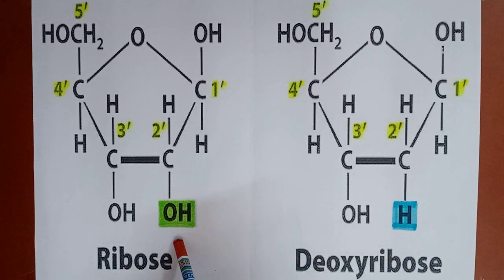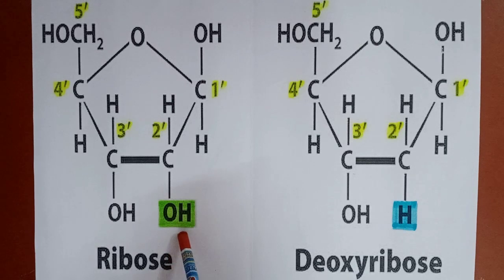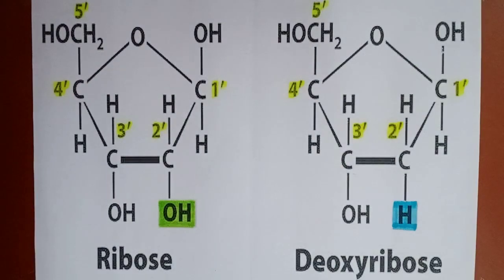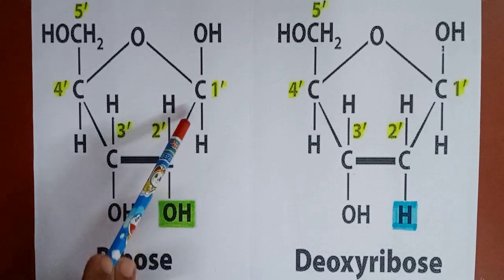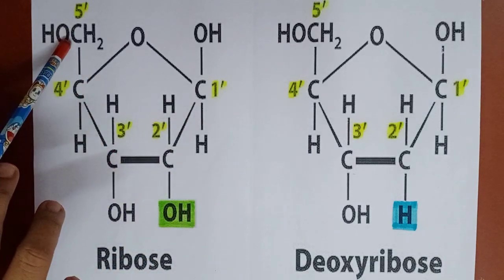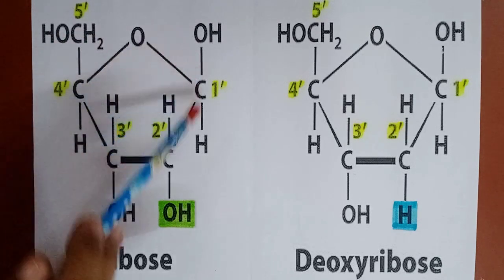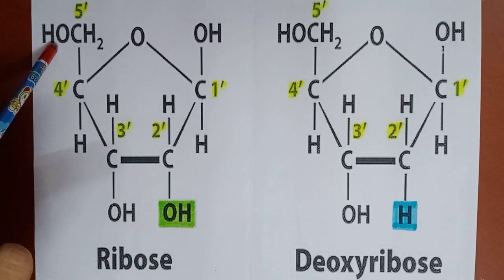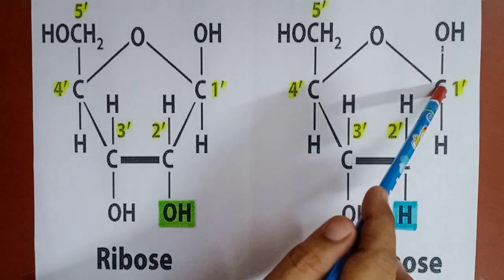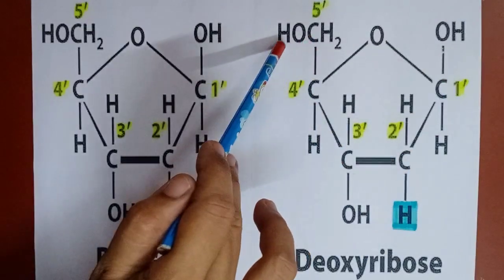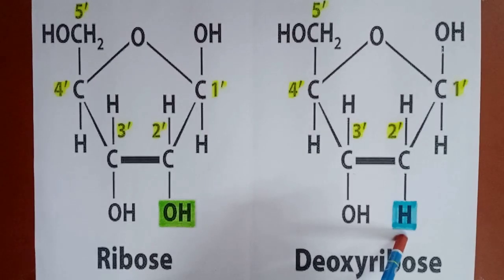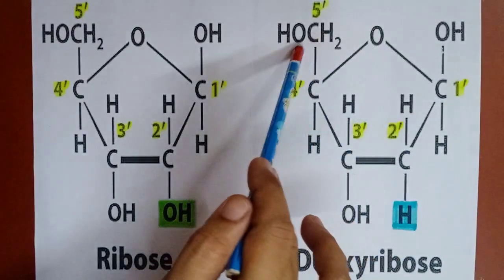This hydroxyl group makes ribose sugar more reactive than deoxyribose. So the chemical formula of ribose is C5H10O5. Deoxyribose is C5H10O4.